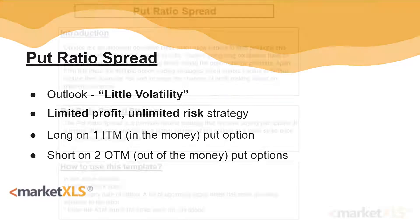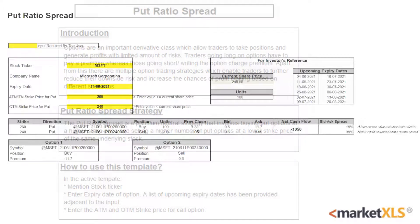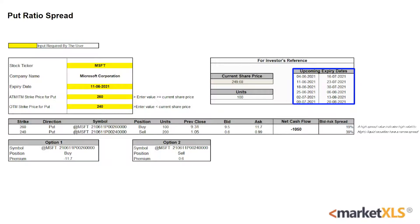MarketXLS also offers a template for this strategy. Here is an introduction page and here is an active template. The yellow cells have to be inputted by the user — the stock ticker, expiry date, and the ITM and OTM strike prices for the put. Some upcoming expiry dates are available for reference. For the purpose of this video we'll be using Microsoft with expiry date of 11 June. The in-the-money and out-of-the-money strike prices are $2.60 and $2.40. We've bought one in-the-money $2.60 put option contract and sold two out-of-the-money $2.40 put option contracts of Microsoft.